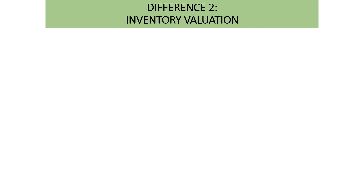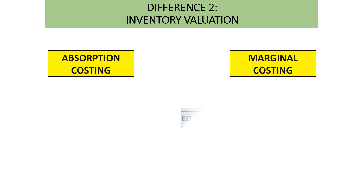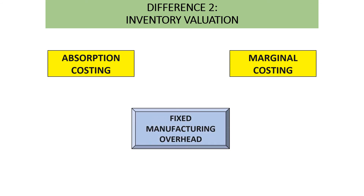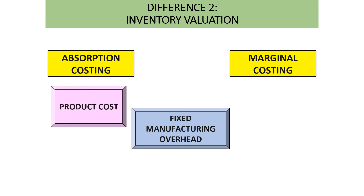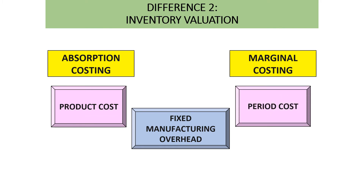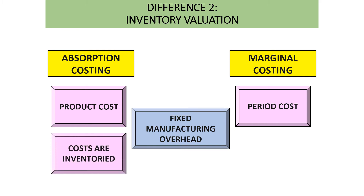The second difference is inventory valuation. The key distinction between absorption costing and marginal costing is the treatment of fixed manufacturing overhead. Under marginal costing, fixed manufacturing overhead is not included in product cost — it is treated as a period cost or expense. Under absorption costing, these costs are inventoried.